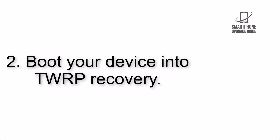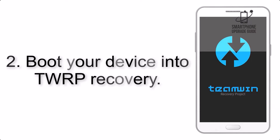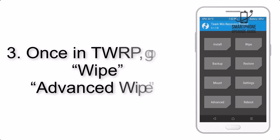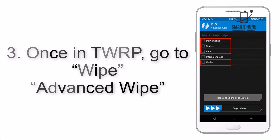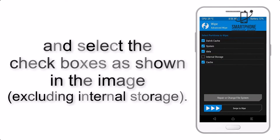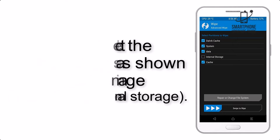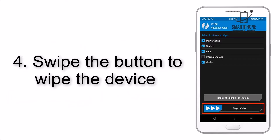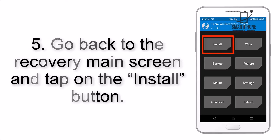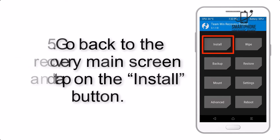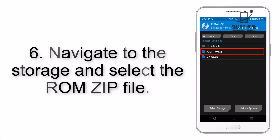Step 2: Boot your device into TWRP recovery. Once in TWRP, click on Advanced and select the checkboxes as shown in the image, excluding internal storage. Step 4: Swipe the button to wipe the device. Step 5: Go back to the recovery main screen and tap on the Install button.